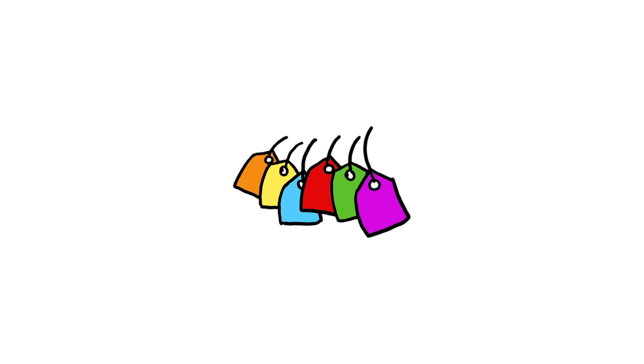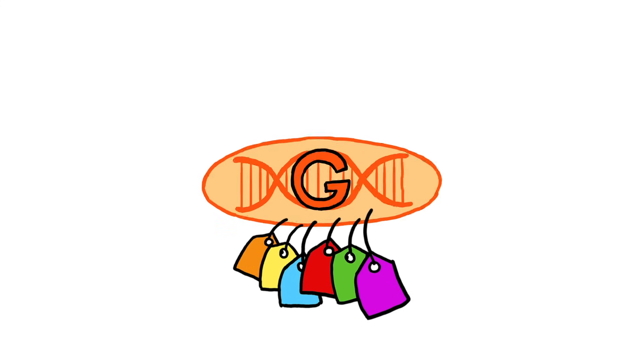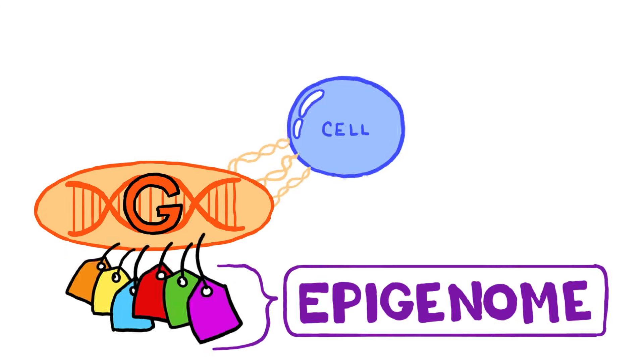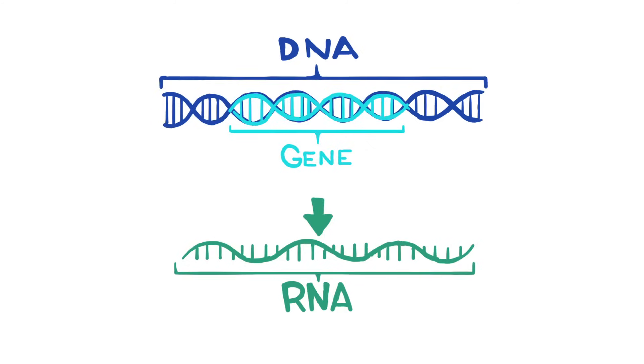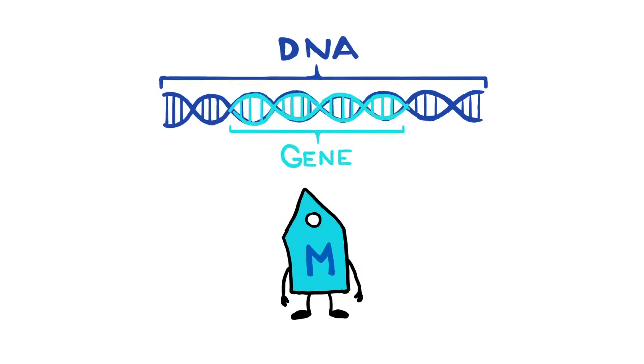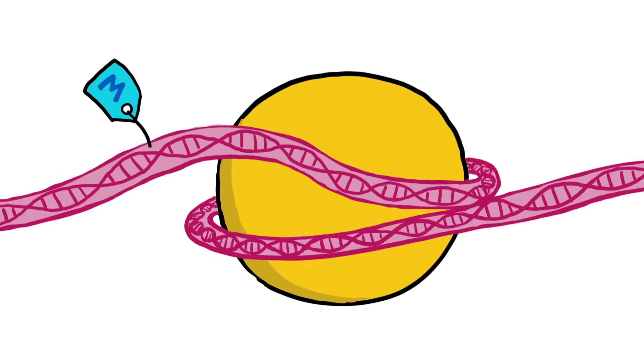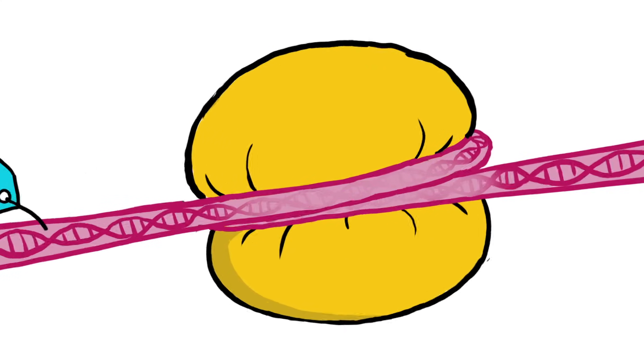The set of all of the chemical tags that are attached to the genome of a given cell is called the epigenome. Some of these, like a methyl group, inhibit gene expression by derailing the cellular transcription machinery or causing the DNA to coil more tightly, making it inaccessible.